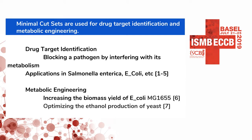In many cases of target identification, we can build a metabolic network of a pathogen and look for ways to block the target reaction — the biomass reaction, which is responsible for the growth of the pathogen. So we are looking for a small group of reactions whose absence will cause the biomass reaction to get blocked. This approach has had many successful results. Minimal cut sets also have applications in metabolic network engineering, such as increasing the biomass yield of E. coli and optimizing the ethanol production of yeast.